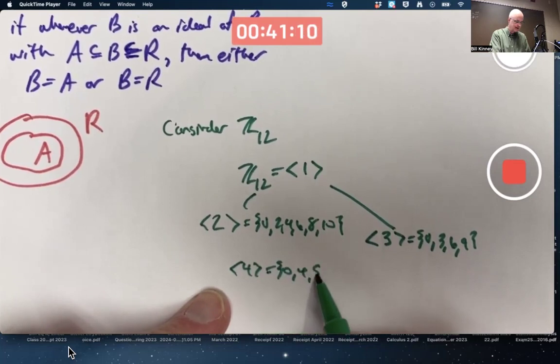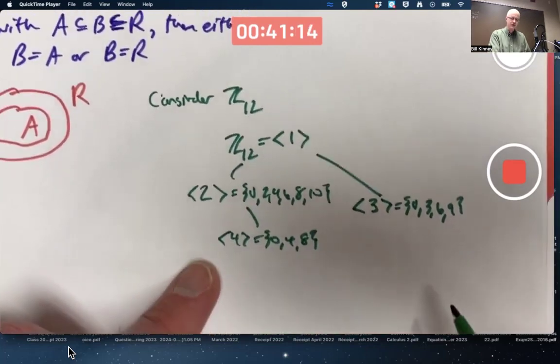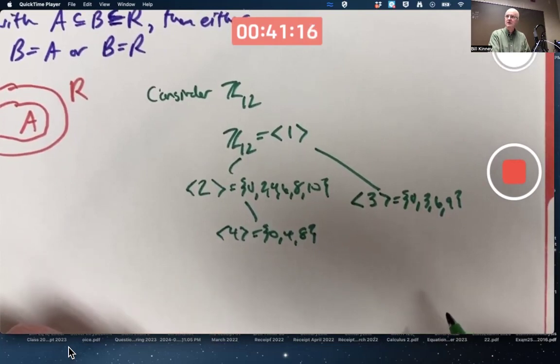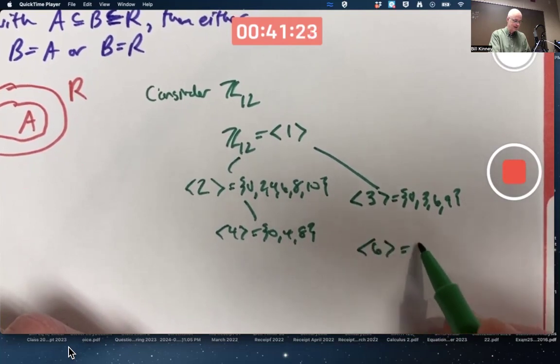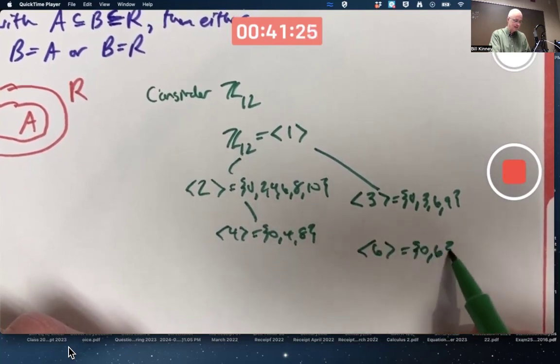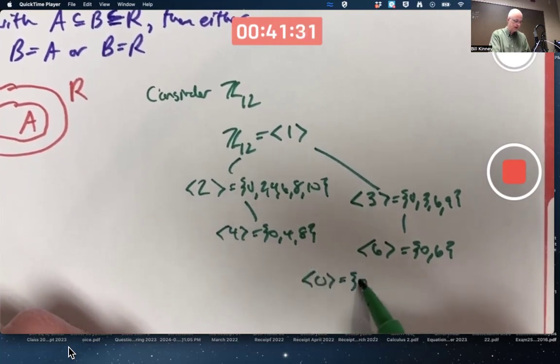0, 4, and 8. And finally, two more to go. We've got this one that's got order 2 generated by 6. It's a subring of this one. And then we have the trivial subgroup or the trivial subring generated by 0.